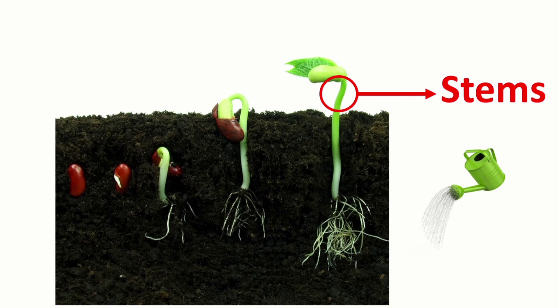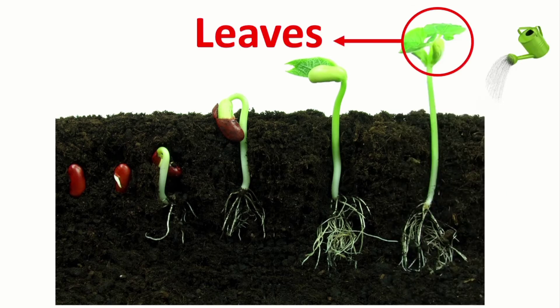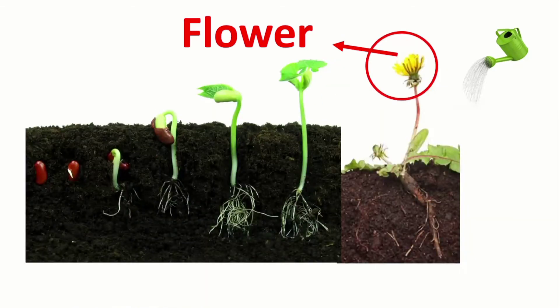And then we'll keep adding water and it will grow into stems. Stems are above the soil — it's called stems. And then the stems will grow into leaves. Leaves are the green parts that grow on a plant. And then the plant will grow into a flower. We keep adding water and it will turn into a flower. Repeat after me: flower.